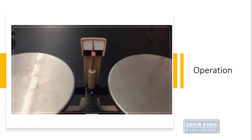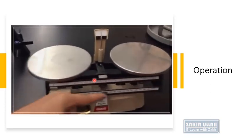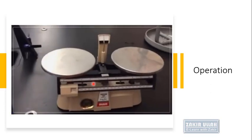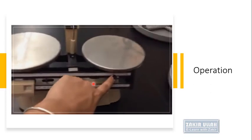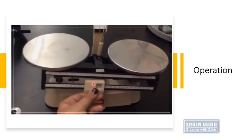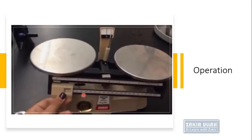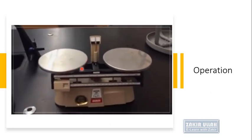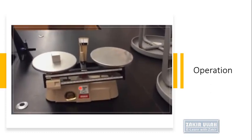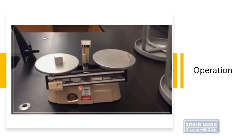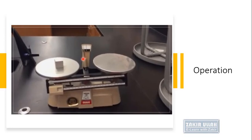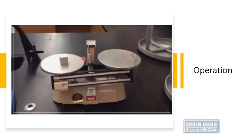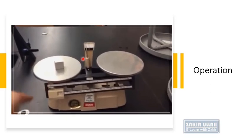The beams give us the units, tens, and hundreds readings of the weight, and the riders give us the fine reading. To weigh an object on the trip balance, we first place the object on one pan. We can observe the fulcrum moving to the right side toward the heavier pan. To determine the weight, we then adjust the riders on the beam.